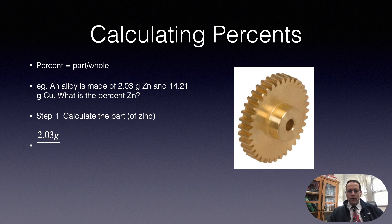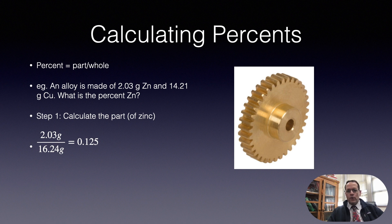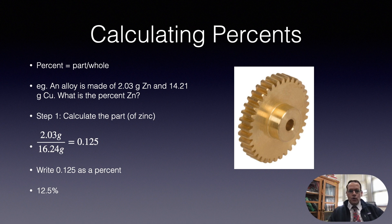Now what we want to do is calculate the part of the zinc. So it's 2.03 grams divided by the whole, which is 16.24 grams, and that gives us 0.125 when you do that in your calculator. Then we want to express that decimal as a percent — you can just multiply by a hundred or move the decimal place over two places and you get 12.5%. Notice how the units here are percent; we could actually write percent Zn.